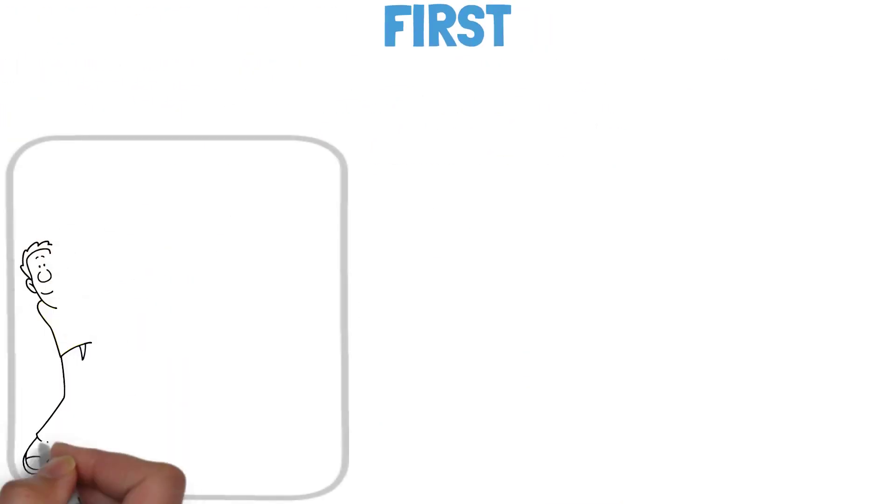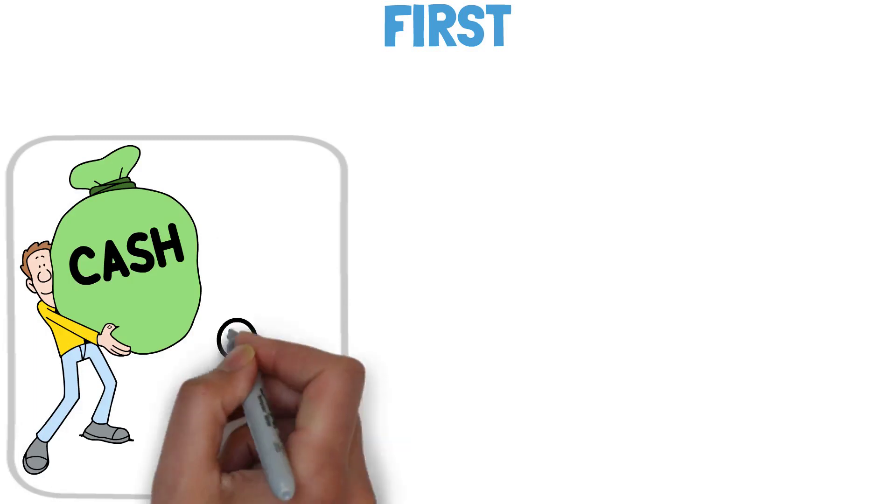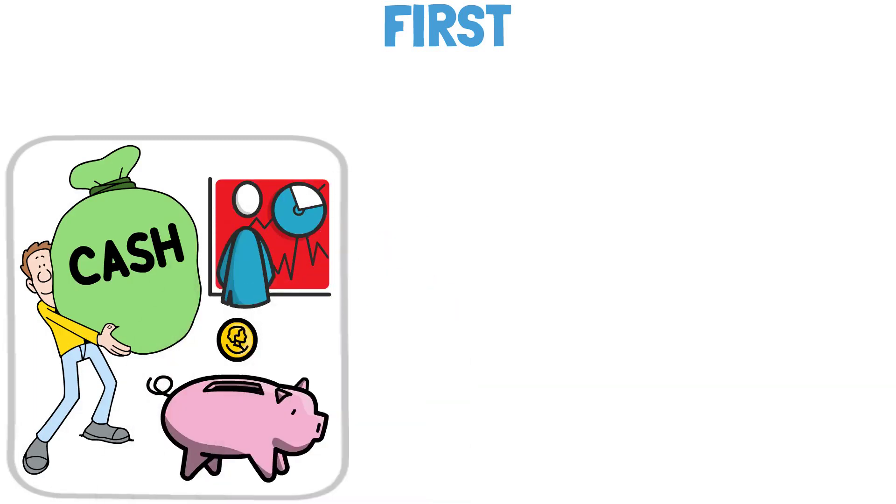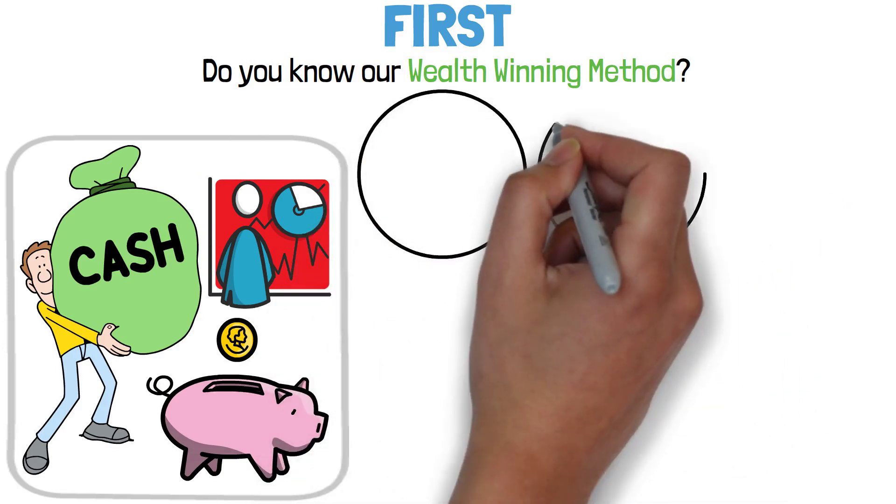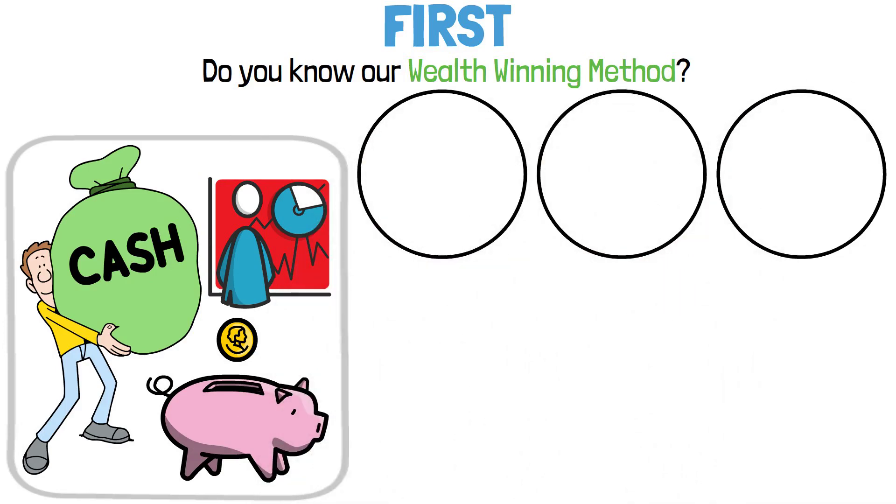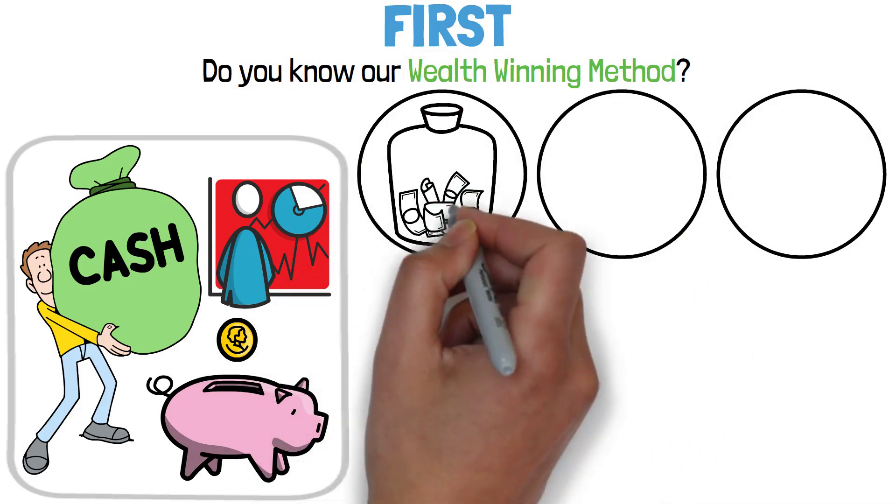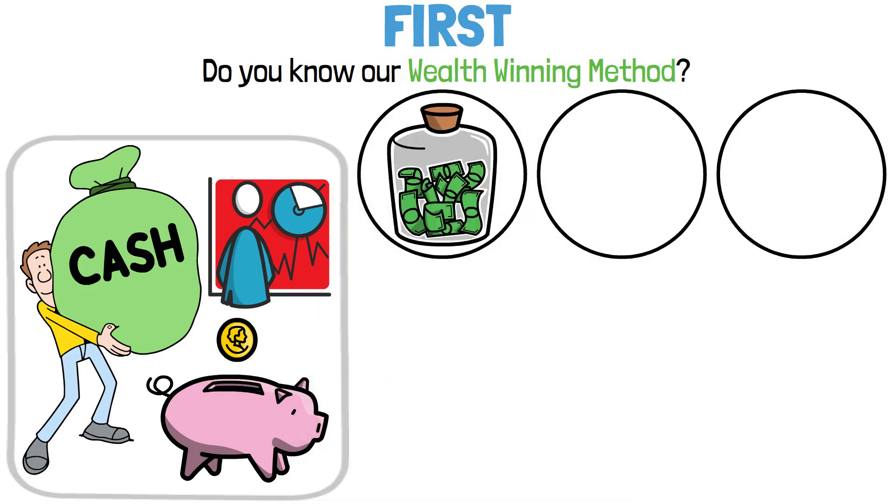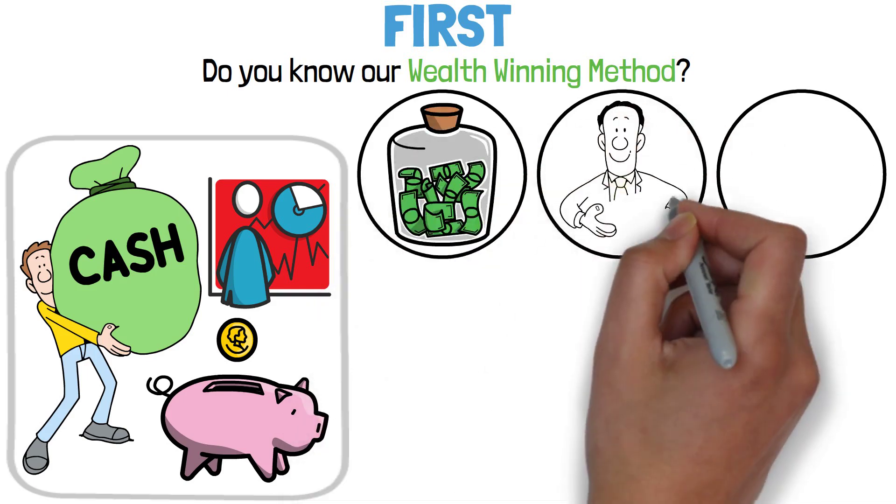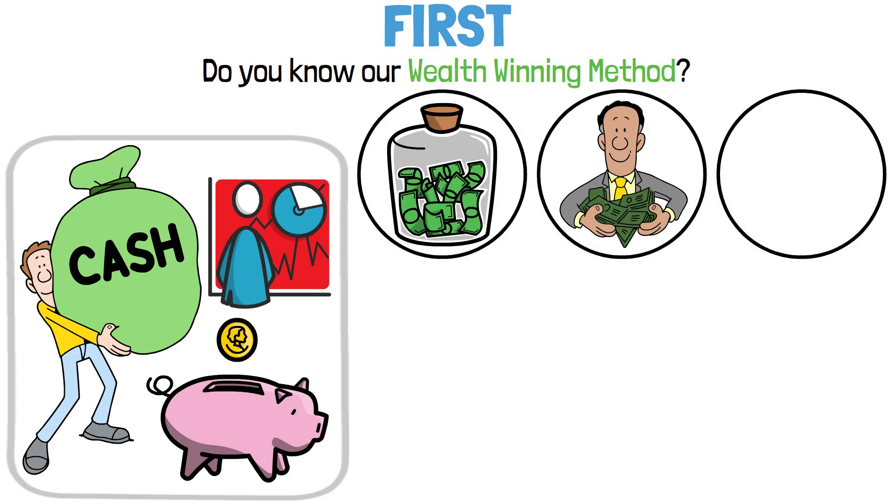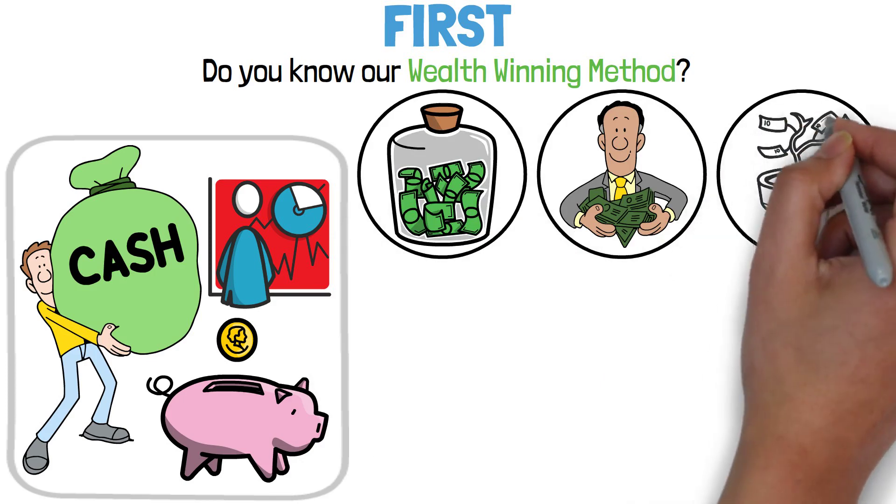First, it will bring you extra income to pay off debts, save more money, and invest more money. Do you know our wealth winning method? The method is based on the three basic steps to build wealth sustainably. One, you must save more than the average. Two, you must earn more than the average. And three, you must invest more and better than the average.